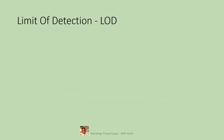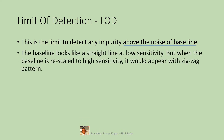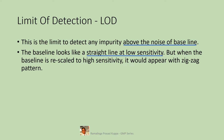Limit of detection, LOD, is the limit to detect any impurity above the noise of the baseline. When there is an impurity or any organic entity going through the detector cell in HPLC or GC, you get a signal. When there is no such impurity going through the detector, there is no signal. Whatever small disturbances get recorded is called noise. So when there is no signal, the detector disturbances will be only noise.